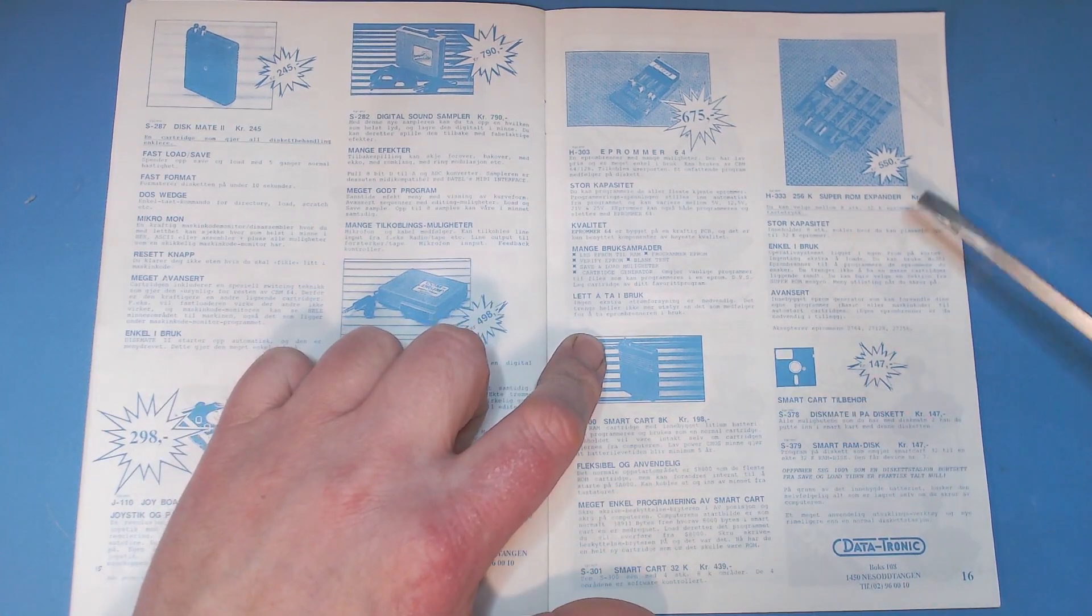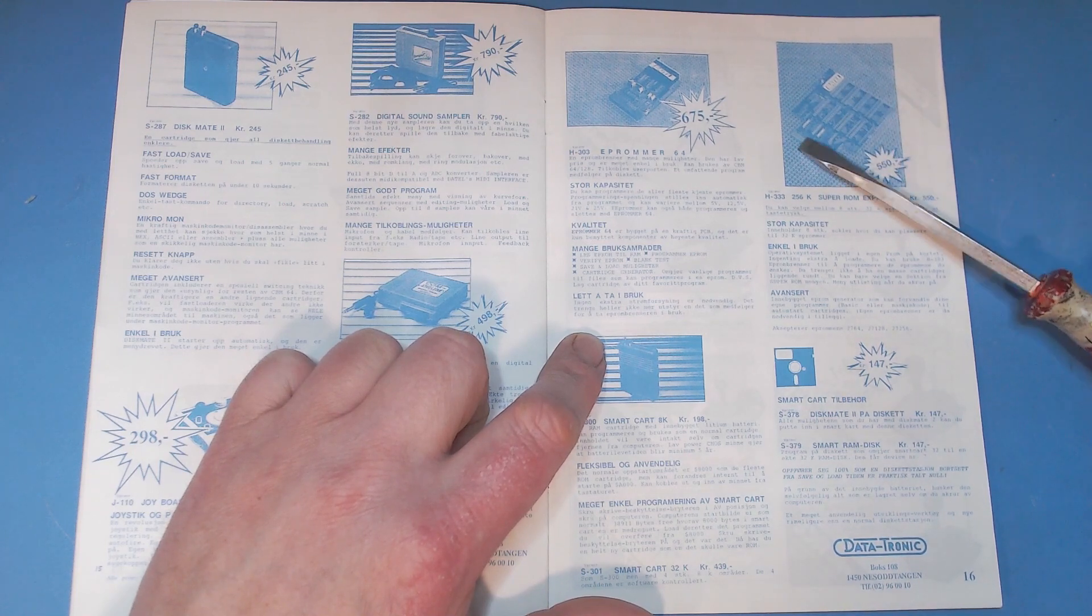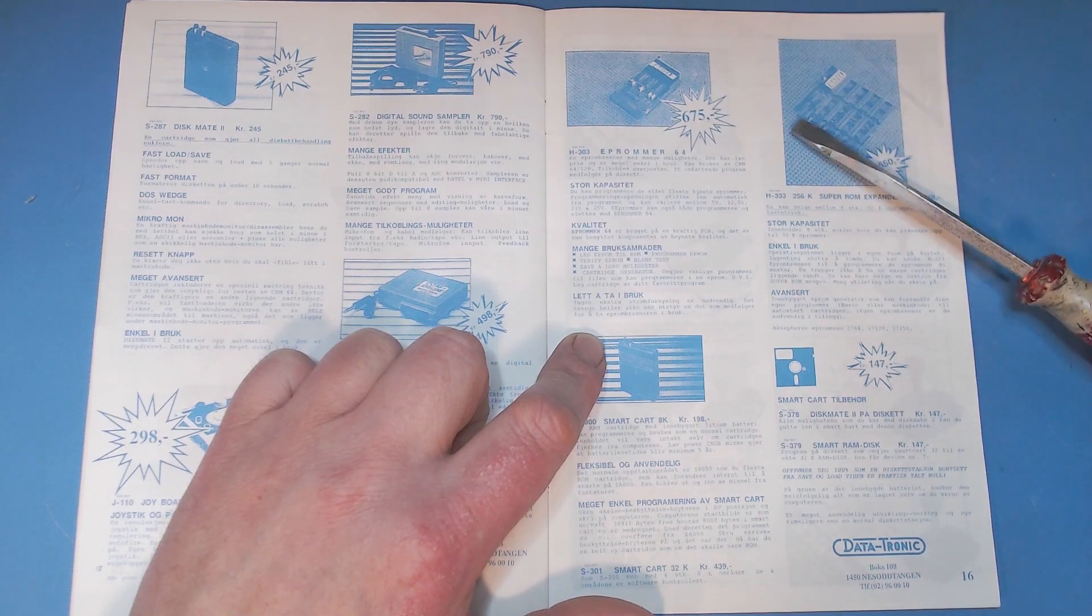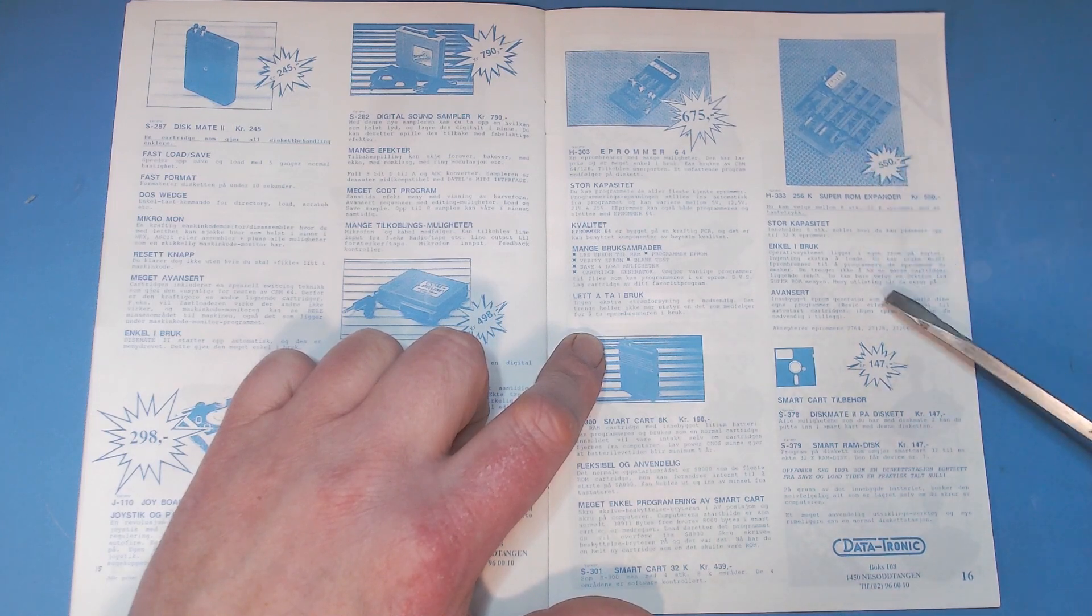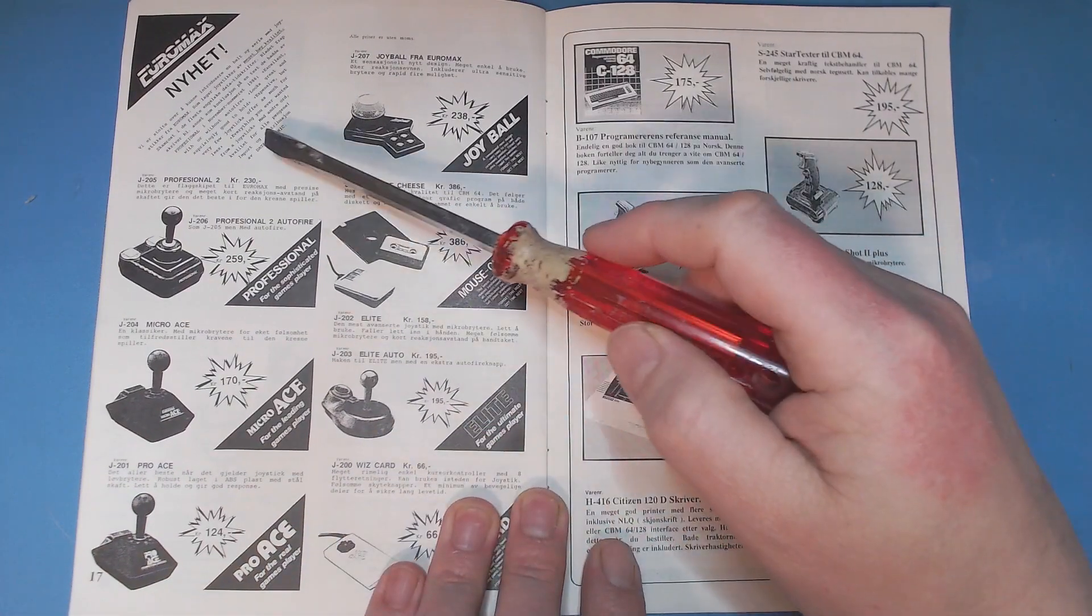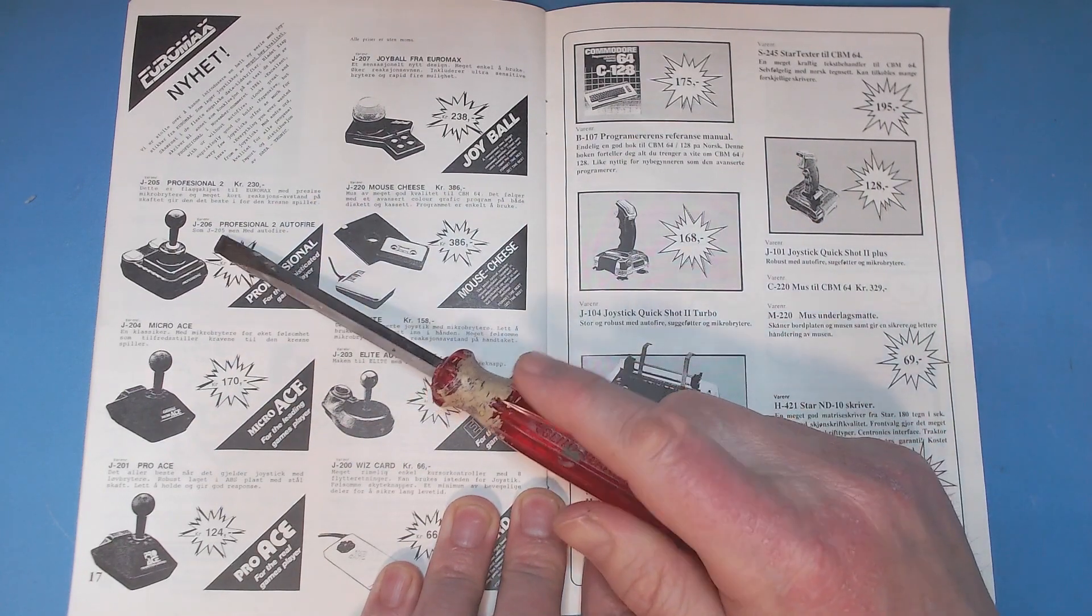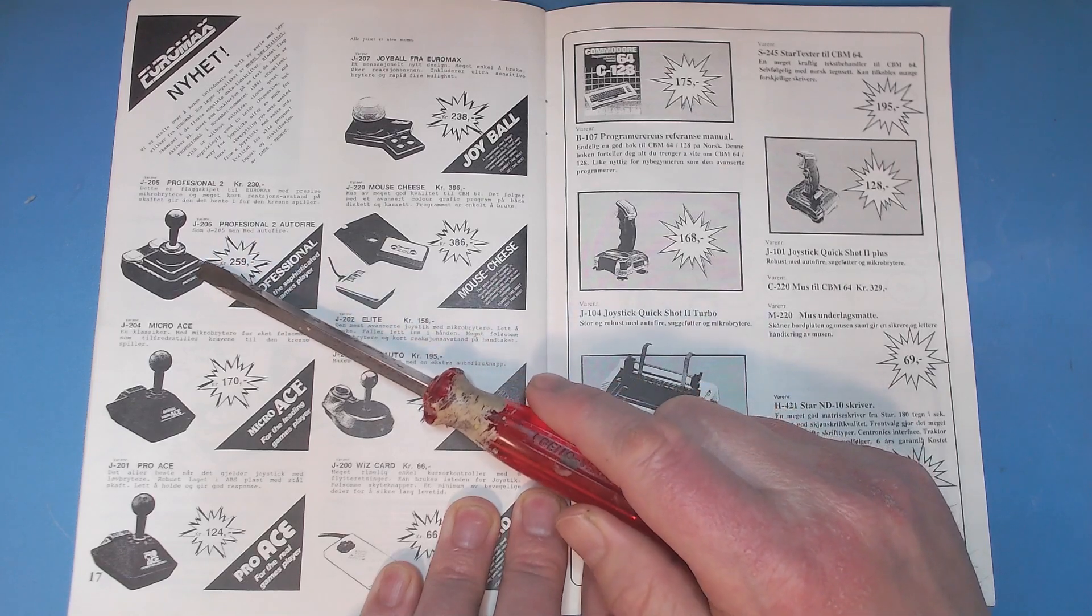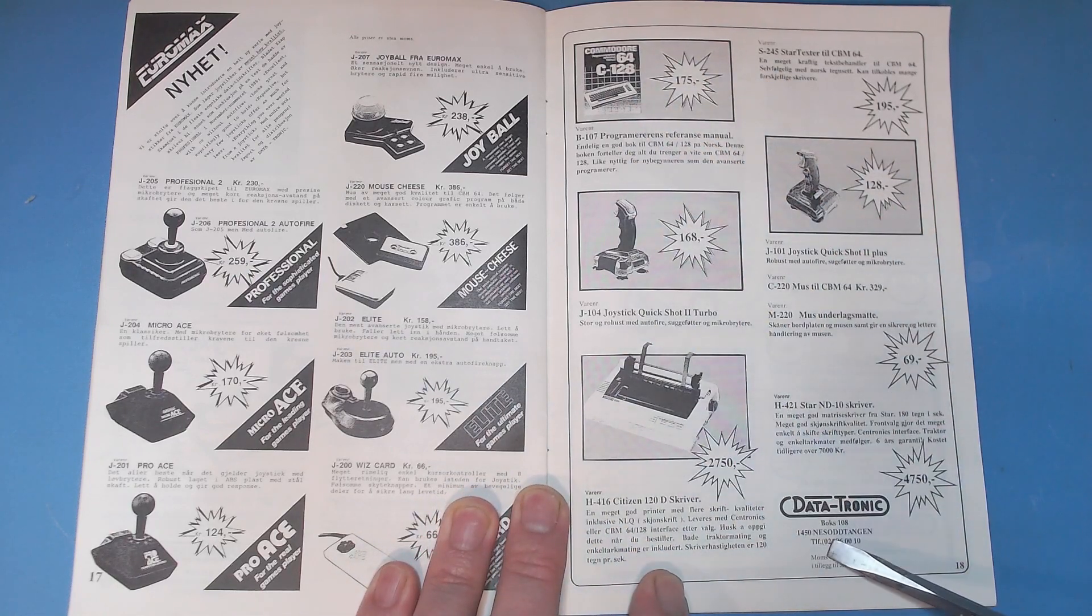More cartridges - Super ROM Expander, where you could actually put in cartridge ROMs and have your Commodore 64 not see everything at once, but you could switch between them. I never actually heard of anyone who got this to work properly. Various joysticks - I myself preferred the Competition Pro variation, even though I was not much of a gamer anyway. And you have some programmer's reference manuals.